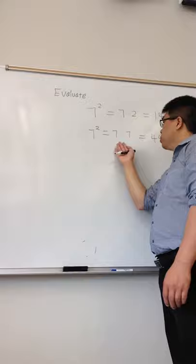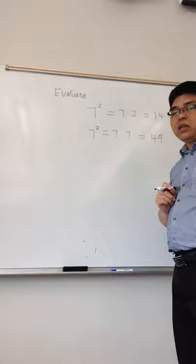7 squared equal to 7 times 7, 2 factors of 7, and the answer equal to 49. And if you have any questions, please let me know. I'm here to help.